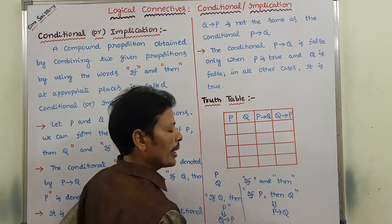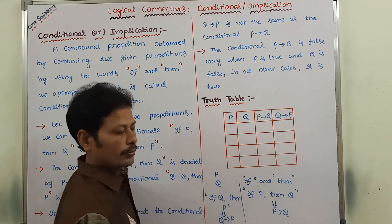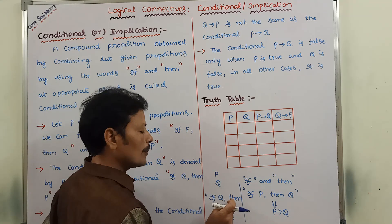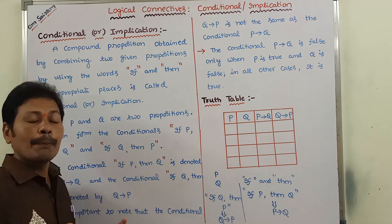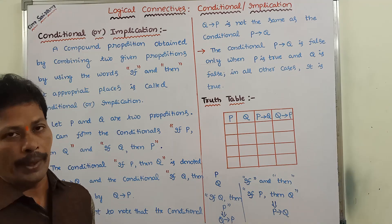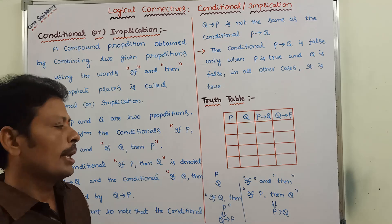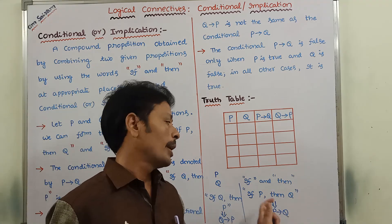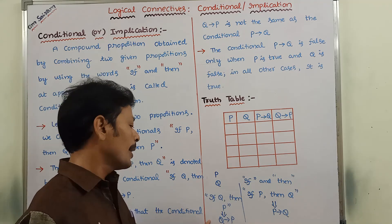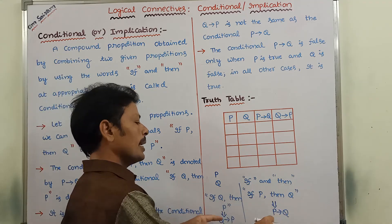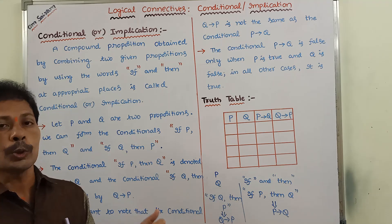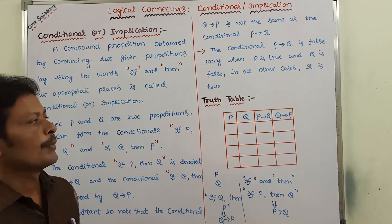P Conditional Q is nothing but IF P, THEN Q. Q Conditional P can be read as IF Q, THEN P. It is important to note that P Conditional Q is not equal to Q Conditional P. This is the most important point. In the case of P Conditional Q: IF P, THEN Q. Whereas in the case of Q Conditional P: IF Q, THEN P. By observing these two statements, we can say that P Conditional Q is not equal to Q Conditional P.